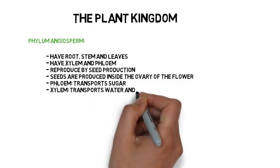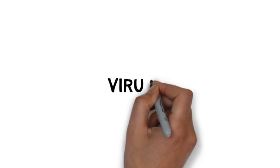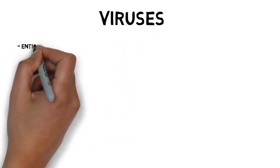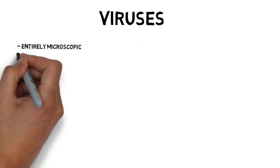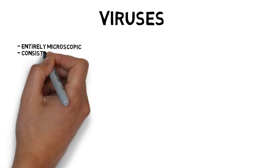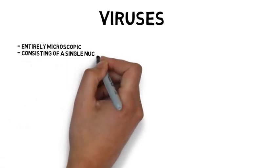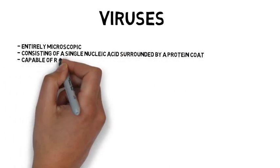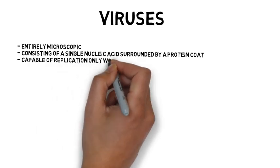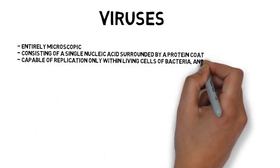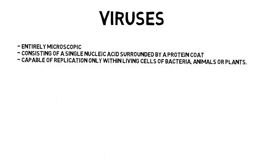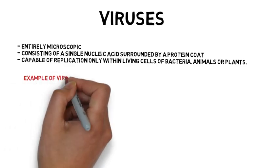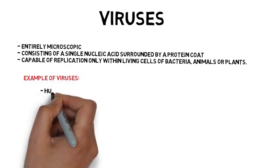Viruses are entirely microscopic, consisting of a single nucleic acid surrounded by a protein coat, and are capable of replication only within living cells of bacteria, animals, or plants. Examples of viruses are the human immunodeficiency virus and tuberculosis.